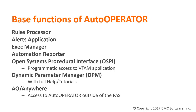The base functions included with MainView Auto Operator include the Rules Processor, which provides an online panel-driven process for users to define rules, which can then be used to trap and take action on system messages, events, and time-initiated tasks. The Alerts application provides a mechanism to identify an event occurring within your system, such as a started task abending or your system dump data sets reaching 99% full.